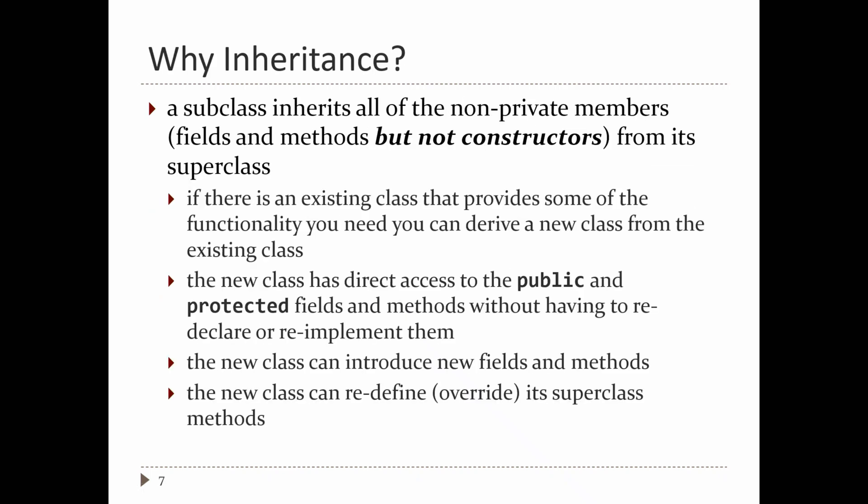Why do we want to use inheritance? When you use inheritance, the subclass inherits everything that's not private in the superclass, except for constructors. In Java, constructors are never inherited — if you need a constructor in a subclass, you have to write it yourself. But everything that's not private gets inherited. Anything that's protected or public in a class is inherited by its subclasses.